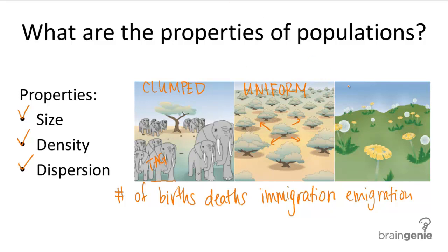The last pattern of dispersion is random dispersion, which can be seen when there is no structure in the pattern. It's generally caused by a lack of attractive forces and a lack of repulsive forces. You see this often in dandelion populations, because dandelion seeds are dispersed by the wind. The wind doesn't arrange seeds uniformly — it just blows them out into a field randomly, so dandelions end up growing in really random patterns.